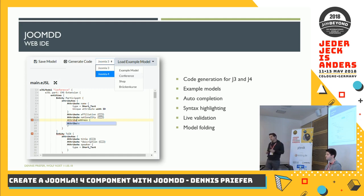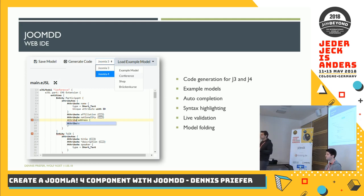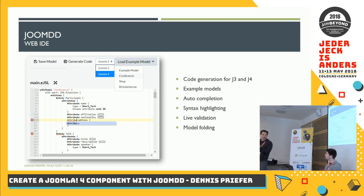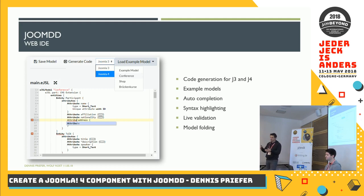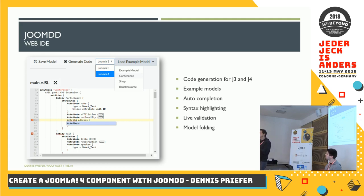We have live validation in this editor and auto-completion. We provide some example models to help you get started, because it's a new domain-specific language you actually have to learn. A lot of developers learn more if they have the actual code or model to go through and see what it does. We created very simple models and more sophisticated models to show what you can do. The language allows very detailed modeling, but you can also create very abstract models — most of the stuff is generated by default with default values, but you can make it more individual if needed.